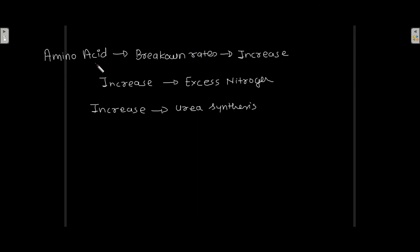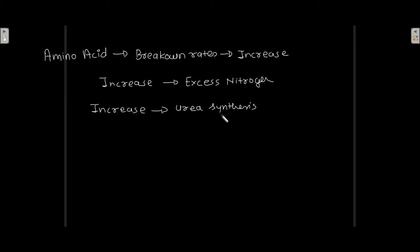If the amino acid breakdown rate increases, there will be an increase in excess nitrogen, and because of this there will be an increase in urea synthesis. The rate of urea synthesis is directly regulated by the breakdown rate of amino acids — if the amino acid breakdown rate is high, the rate of urea synthesis will be high.